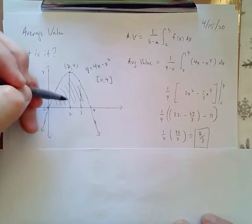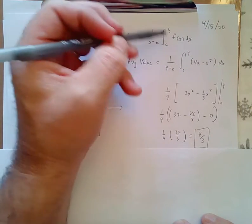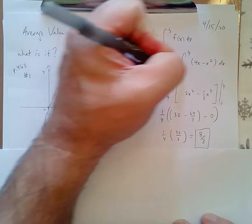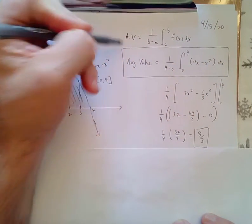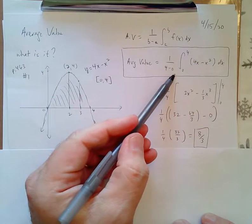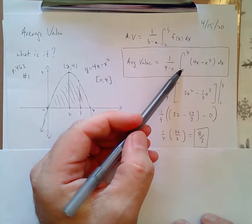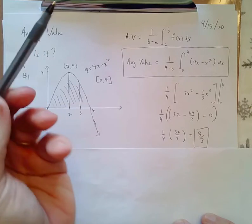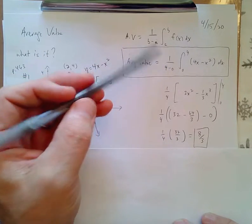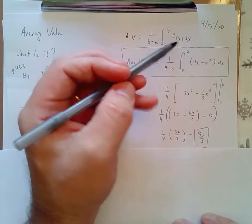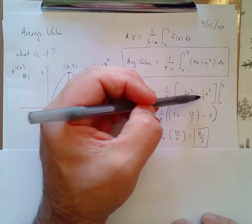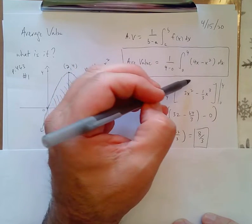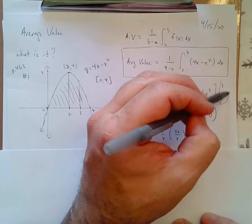We're going to find that average value by putting it right into the formula. I'm going to put it in as 1 over 4 minus 0 times the integral from 0 to 4 of 4x minus x squared dx. Now this is a pretty simple problem. I would integrate inside and evaluate the integral before I multiply the 1 fourth.